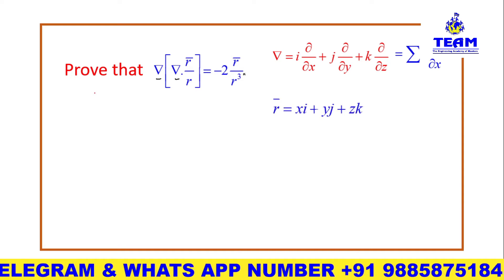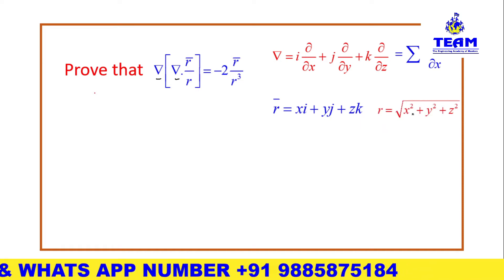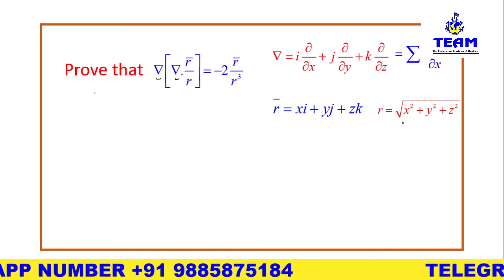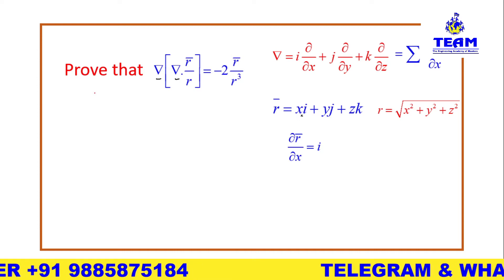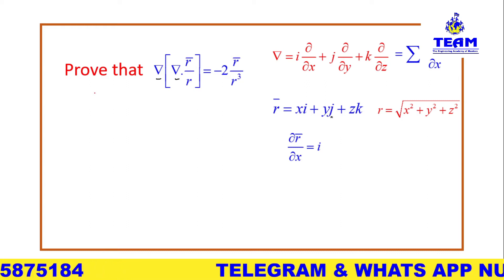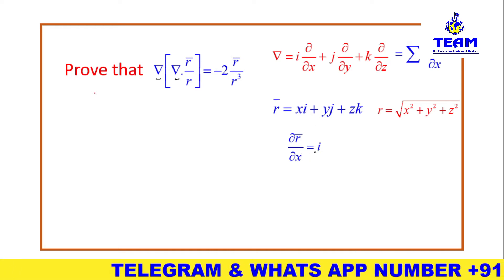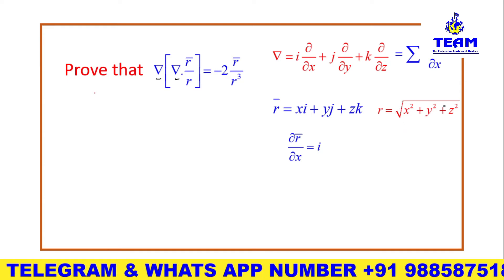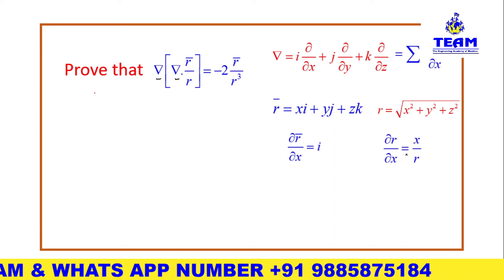What about r̄ and r? r̄ is a vector, denoted as xi + yj + zk. r is nothing but √(x²+y²+z²). One important thing you must know: ∂r̄/∂x = i, because differentiating xi+yj+zk with respect to x gives i (the y and z terms are constants). Similarly, ∂r̄/∂y = j and ∂r̄/∂z = k. For ∂r/∂x, using the chain rule gives x/r.